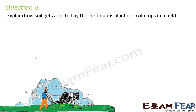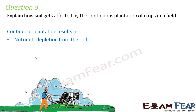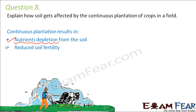Question number eight: explain how soil gets affected by continuous plantation of crops in a field. If you continuously cultivate crops in the same field, every time the crops will take in minerals and nutrients from the soil. The soil gets no gap or recovery time, so it is continuously being depleted of nutrients by the plants. Over time, the soil will have a lack of nutrients — there will be nutrient depletion.